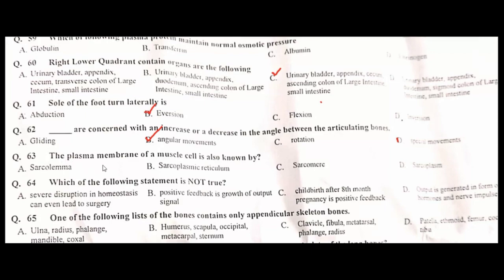The plasma membrane of the muscle cell is known as sarcolemma. A is the correct option. Which of the following statements is not true? Childbirth after 8 months of pregnancy is a positive feedback. C is the correct option.